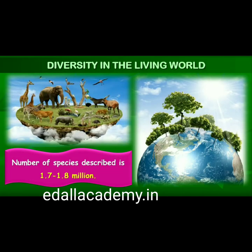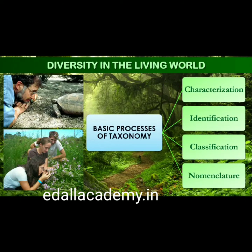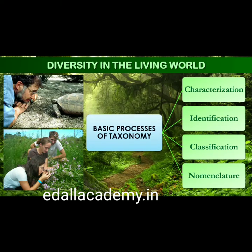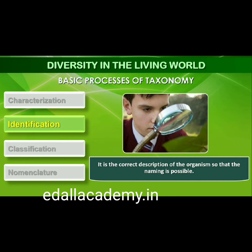The number of species known and described ranges between 1.7 and 1.8 million. This term refers to biodiversity, or the number and types of organisms present on Earth. As we explore new areas, new organisms are continuously being identified. We know the plants and animals in our own area by their local names. These local names vary from place to place, even within a country. Hence, there is a need to standardize the naming of living organisms such that a particular organism is known by the same name all over the world. This process is called nomenclature, and it requires correct identification.